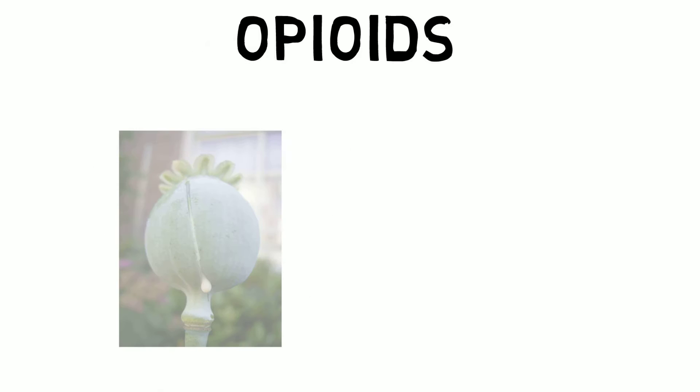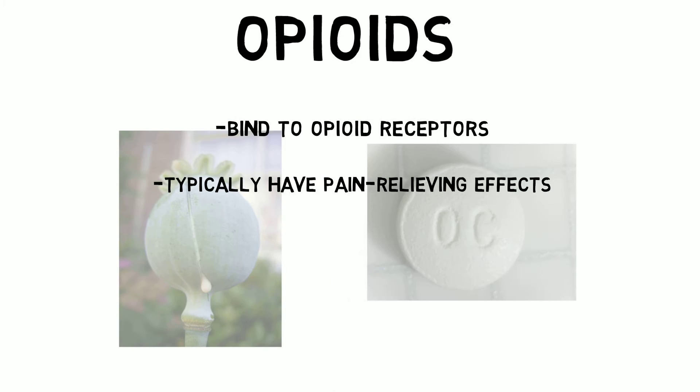The term opioid refers to substances that bind to opioid receptors, usually to exert pain-relieving effects. Opioids can be found naturally in the opium poppy, or they can be partially or completely synthetic.